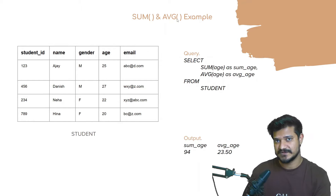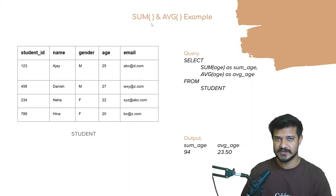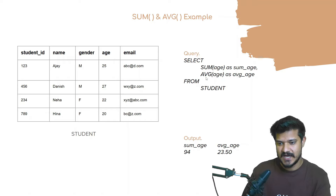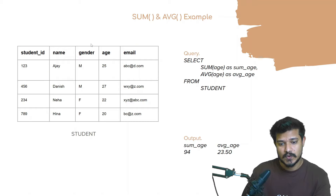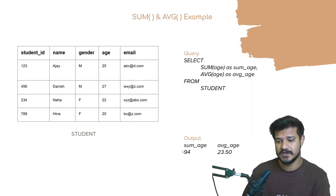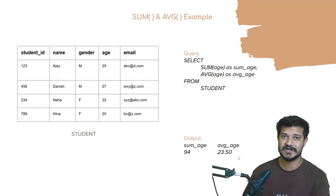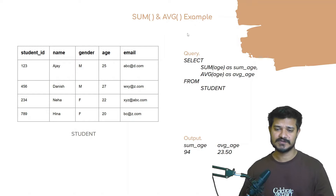The next functions are sum and average. Sum calculates the sum of a particular field. Here, I'm calculating the sum of age and average of age from the whole table with no WHERE condition. The sum of ages — 25 plus 27 plus 22 plus 20 — comes out to 94. The average is the sum divided by the number of rows, which is 94 divided by 4, giving us 23.5.